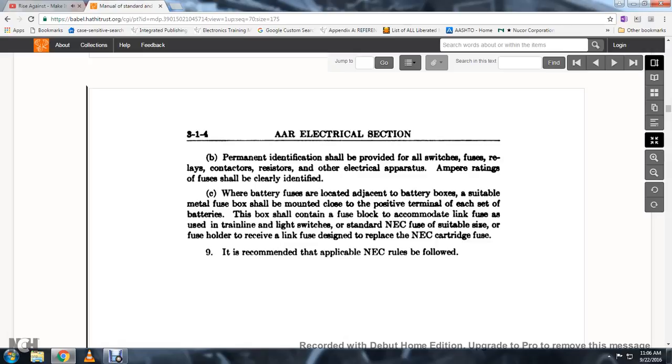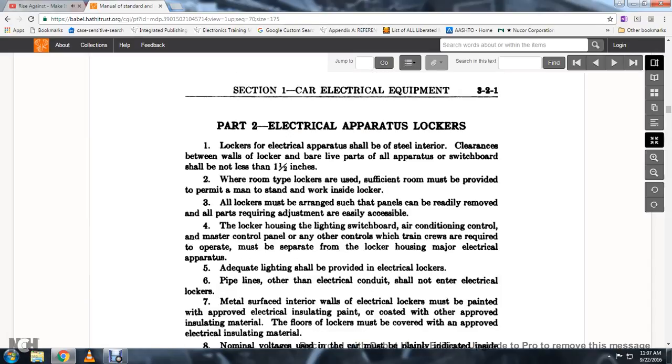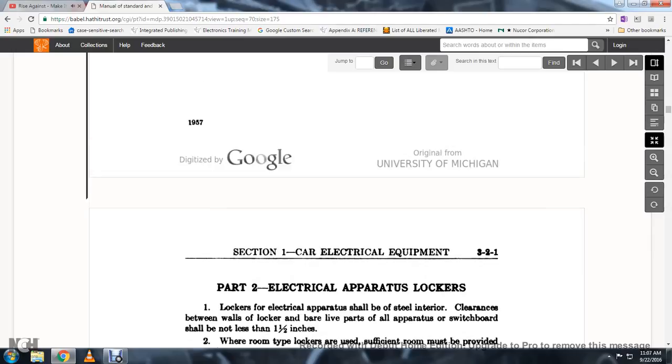Permanent identification shall be provided for all switches, fuses, relays, contactors, resistors, and other electrical apparatus. Amps or ratings such as fuses shall be clearly identified. When battery fuses are located adjacent to the battery box, a suitable metal fuse shall be mounted close to the positive terminals. Each set of batteries in the box shall contain a fuse block to accommodate the link fuse when using the train line light switches with a standard NEC fuse of suitable size. The fuse holder to receive the link fuse is designed to replace the NEC cartridge fuse. It is recommended that applicable NEC rules be filed.